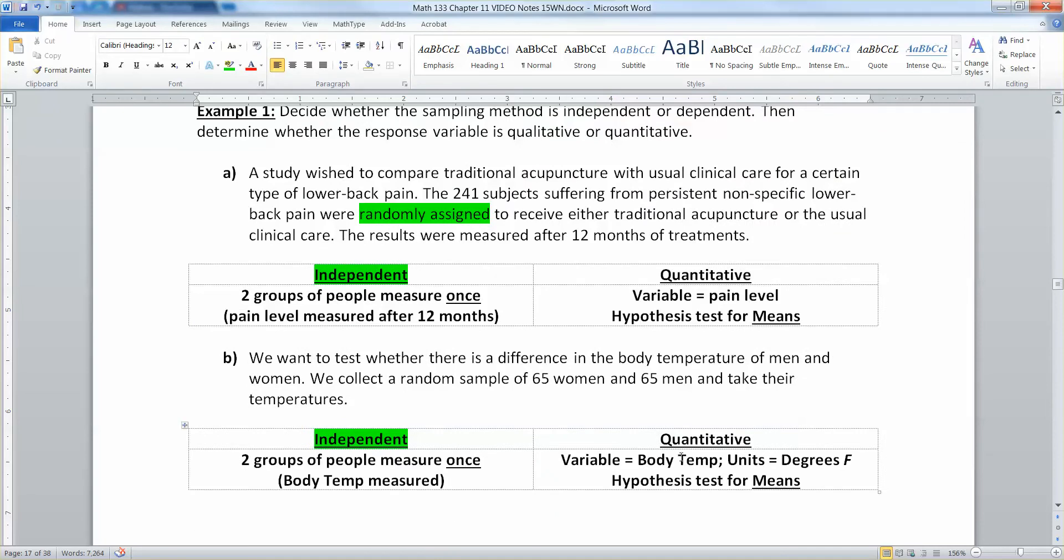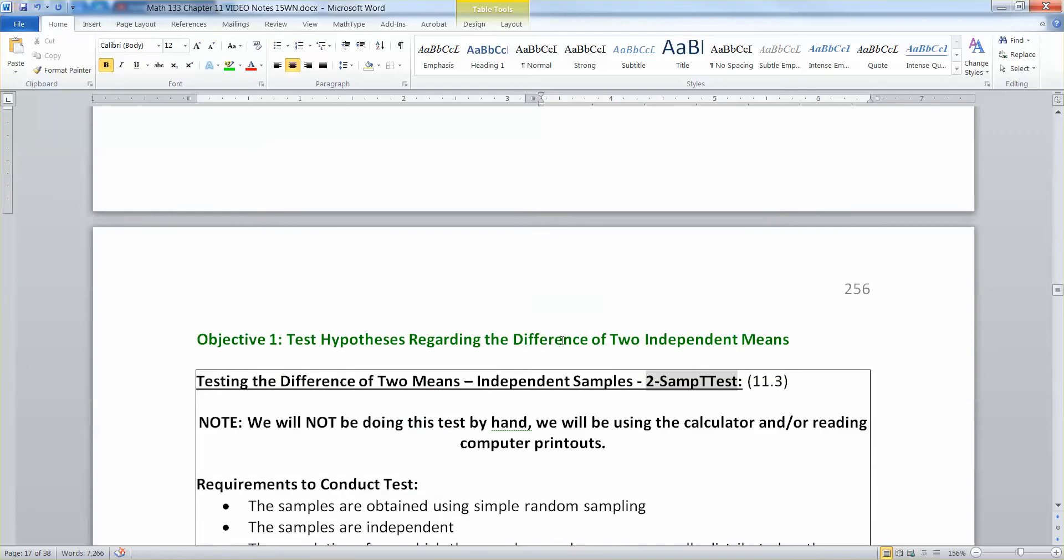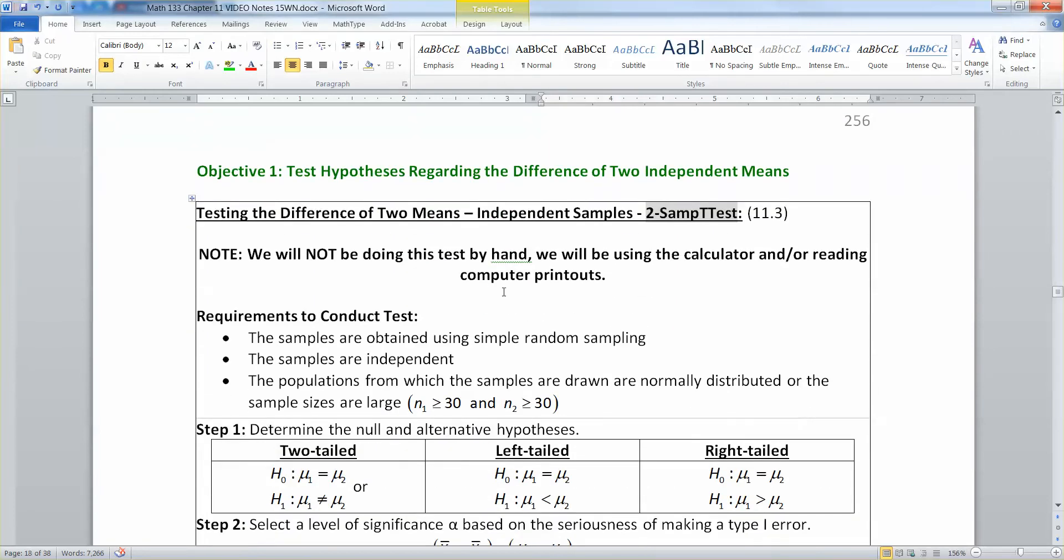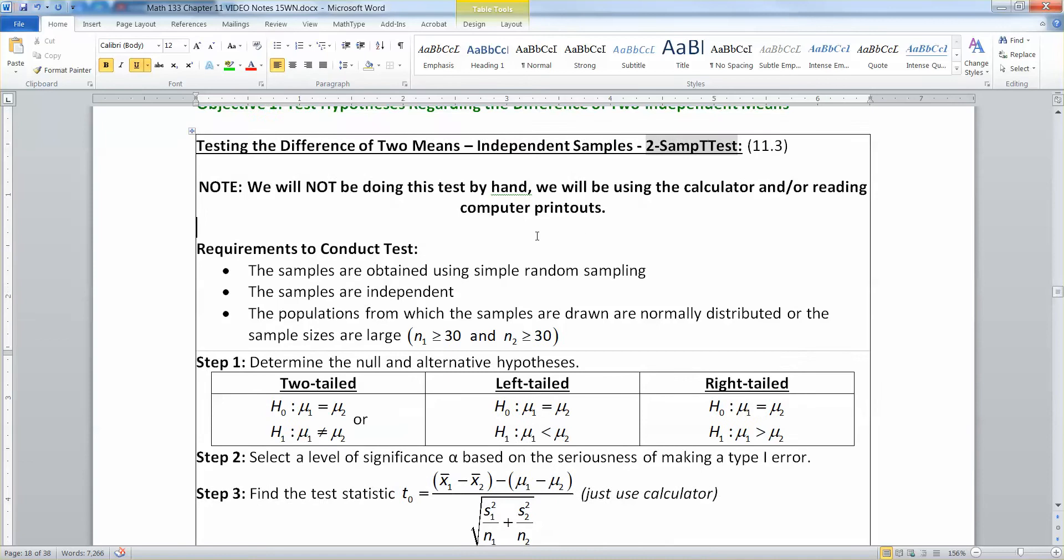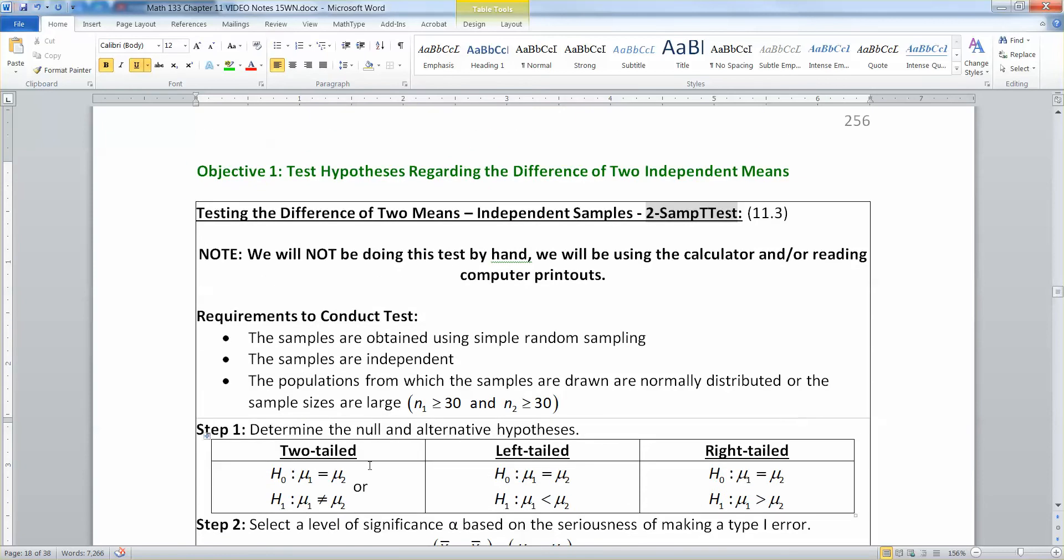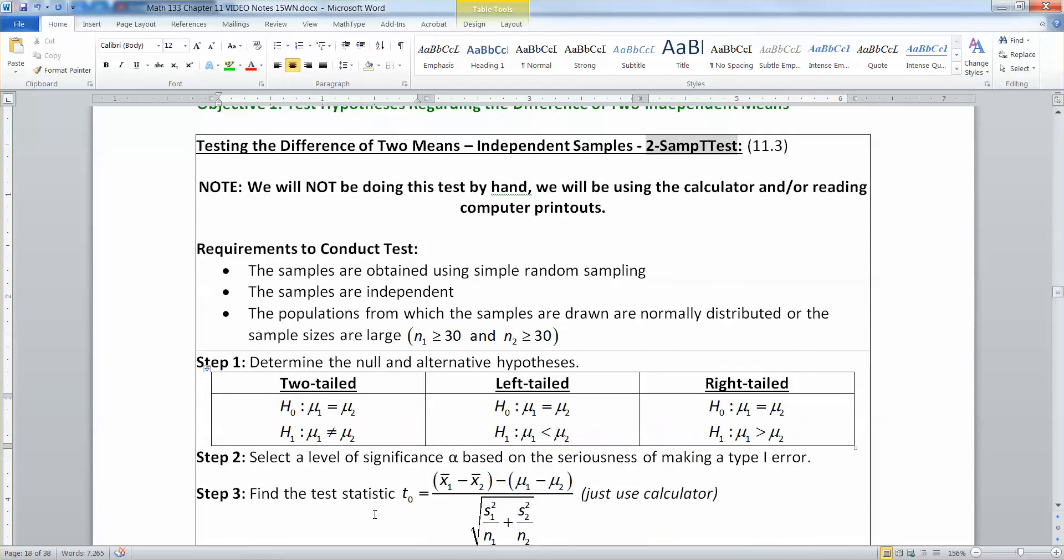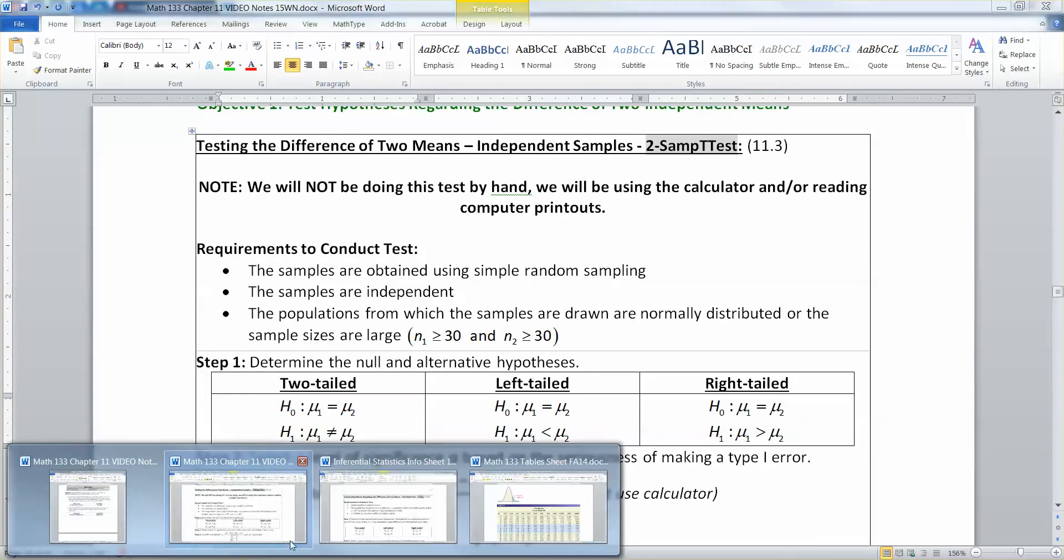Now, once you know you're doing a hypothesis test for independent means, I'm going to throw in independent means, just keeping that in mind. Once you know you're doing that, then you're doing this particular test right here, which is not a test you've seen before. It's the two-sample t-test. In this two-sample t-test, you're going to have hypotheses that look a little bit like what they looked like back in Chapter 10. Let me bring up Chapter 10 real quick.